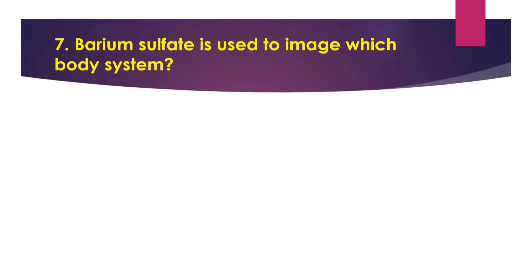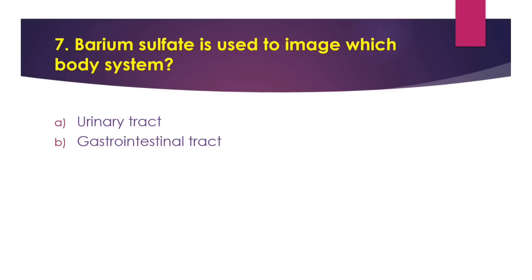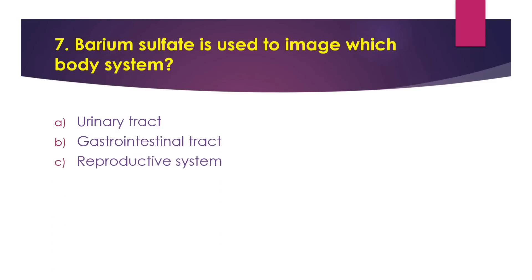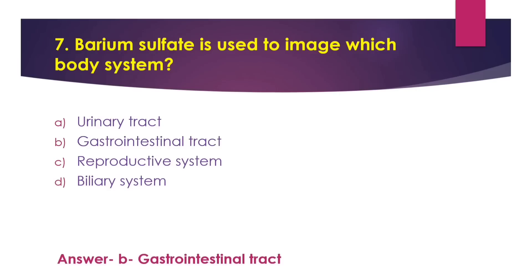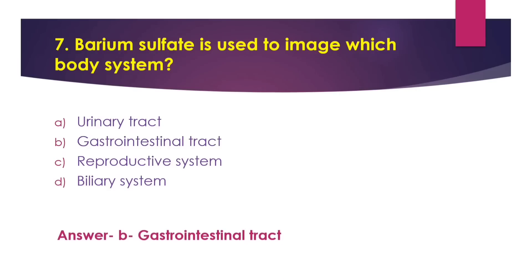Now let's see the seventh question. Barium sulphate is used to image which body system? Option A urinary tract, option B gastrointestinal tract, option C reproductive system, option D biliary system. The answer is option B, gastrointestinal tract.